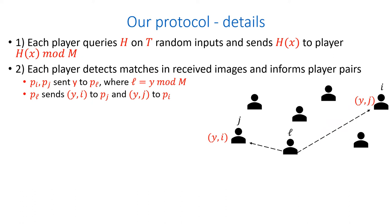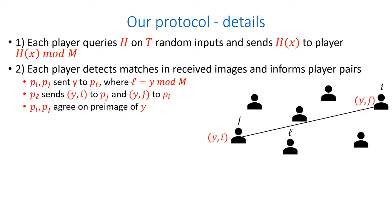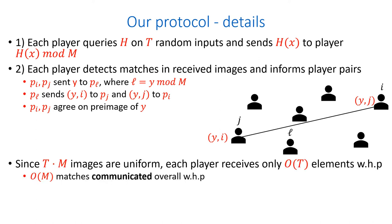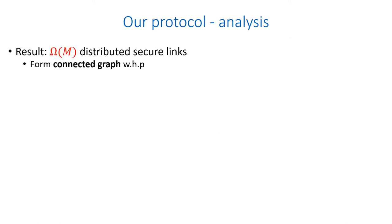Player pl also informs them of the player they have a match with. Now, players pi and pj can agree on the pre-image of y. Note that since all the images are uniform, each player receives only order of t elements with high probability, and there are only order of m matches communicated overall with high probability.